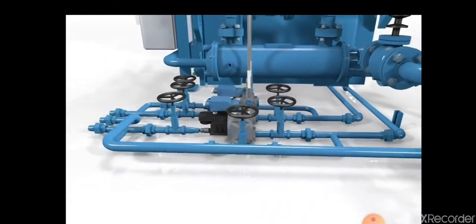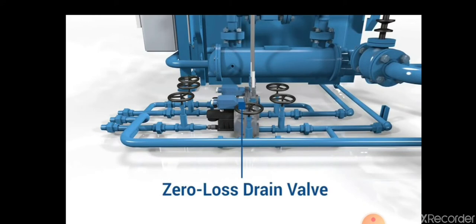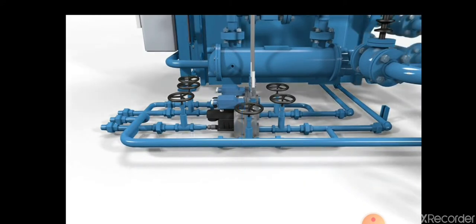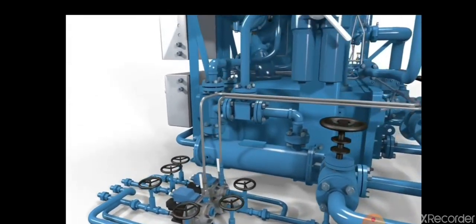By regulating the discharge of condensate, the drain valve increases the efficiency of the process by preventing unnecessary compressed air loss.